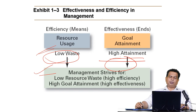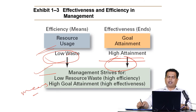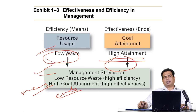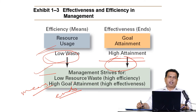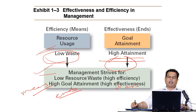A manager should be both efficient and effective, and management deals with both efficiency and effectiveness. Efficiency is basically the means through which we can achieve the ends, that is effectiveness, so efficiency and effectiveness are very much interrelated and are the major concern for any organization. These are the ultimate objectives of management: management strives for lower resource waste — that is high efficiency — and high goal attainment — that is high effectiveness. Resource waste should be low and attainment of goals should be high.